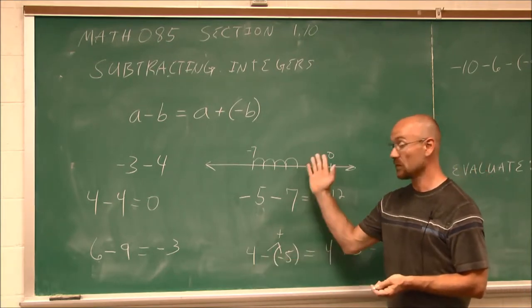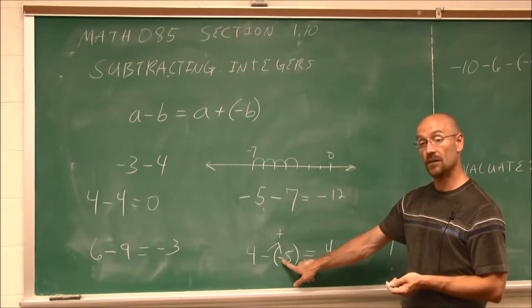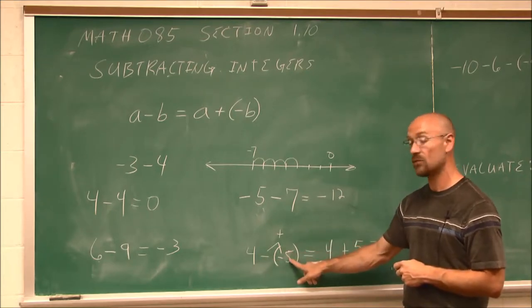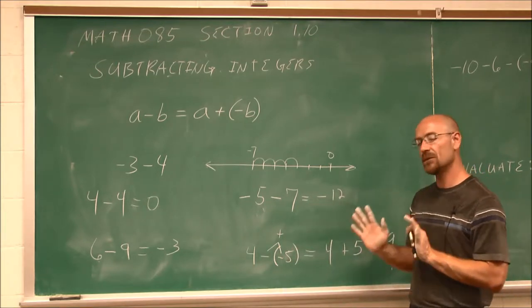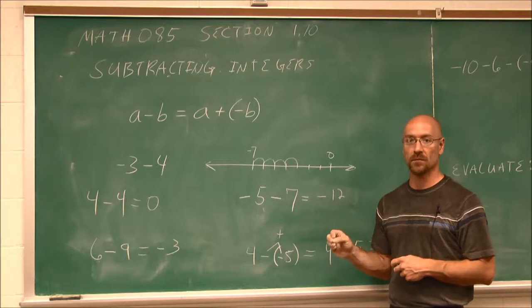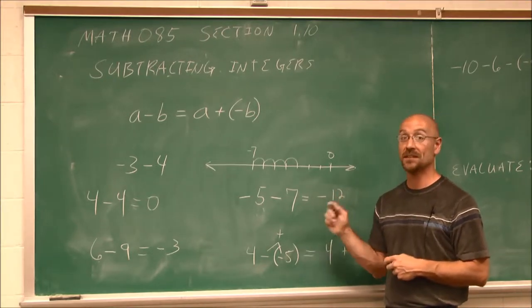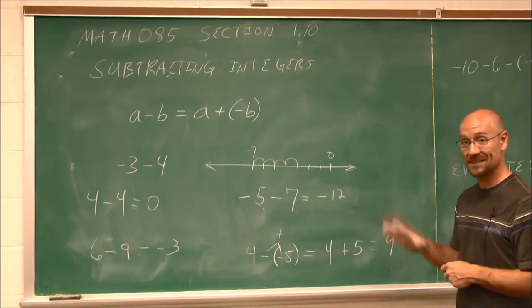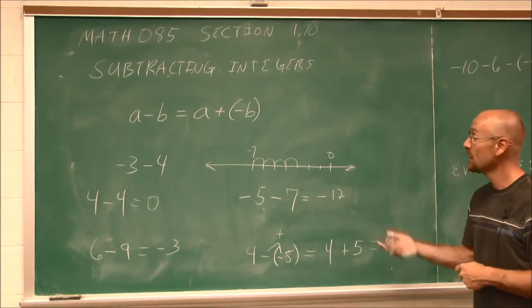We can also verify on a number line: start at 4 and go the opposite direction of left, which is right. Going right 5 brings us to 9. Hopefully we don't struggle too much with negatives — it comes with practice. Don't fret, you're going to make errors. Everybody makes sign errors with negative integers, even instructors. Catching those errors will help you improve your own skills.